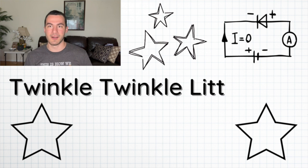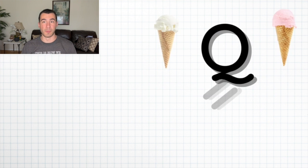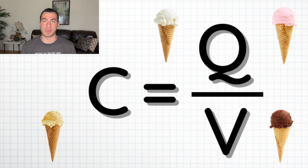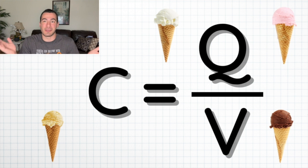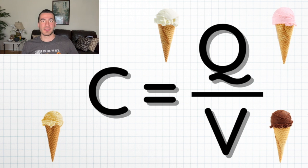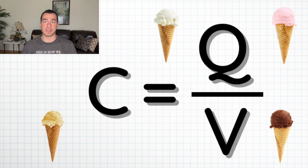For example, I have a couple of mnemonics. One of them for Ohm's Law is: twinkle, twinkle, little star — V is equal to IR. By making it rhyme, we already know voltage is equal to IR. Another formula is related to capacitance, which I like to call the ice cream cone formula. The formula is C is equal to Q over V. I call it the ice cream cone formula because it looks like an ice cream cone — the Q looks like the ice cream scoop, and the V looks like the cone.